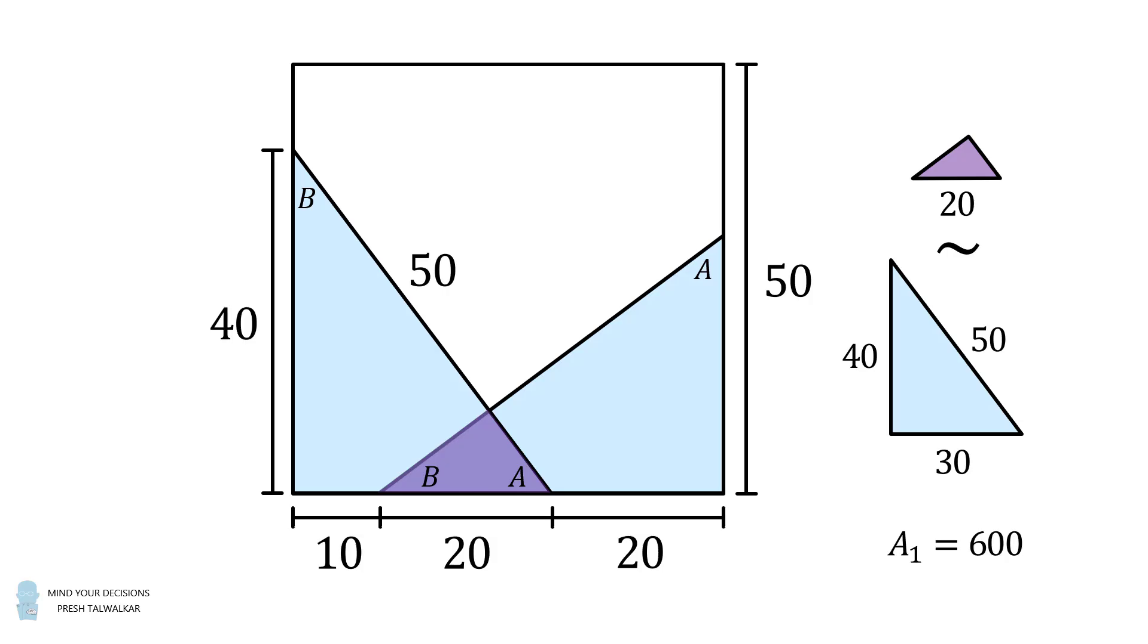Now the similar triangle, which is smaller and purple, this will have an area that's 600 multiplied by the square of the ratio of the lengths of the hypotenuses. So it'll be 600 multiplied by 20 over 50 squared. So this will be equal to 600 multiplied by 2 fifths squared, and that is equal to 96. So we've figured out the areas of these triangles, and now we can solve the problem.